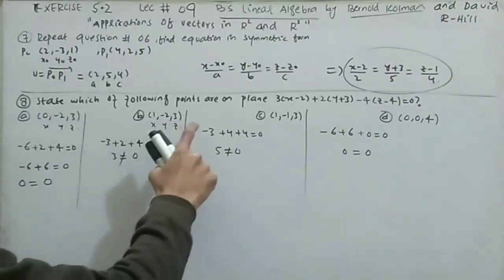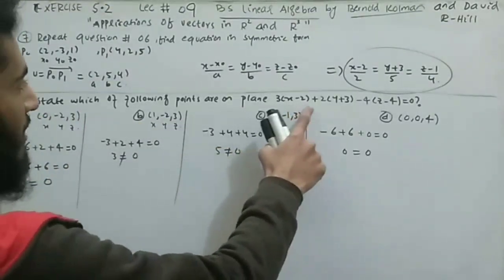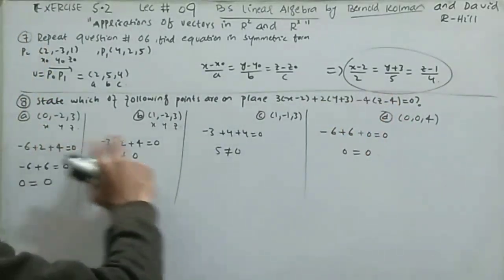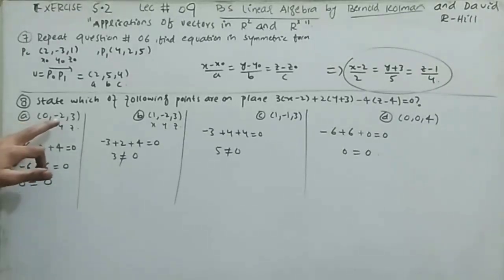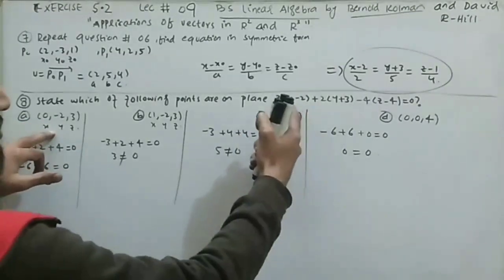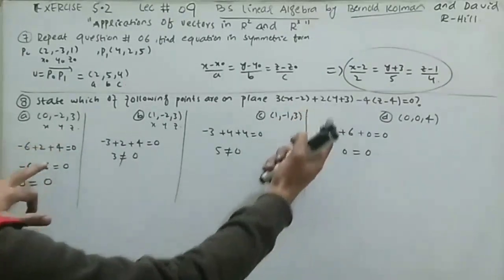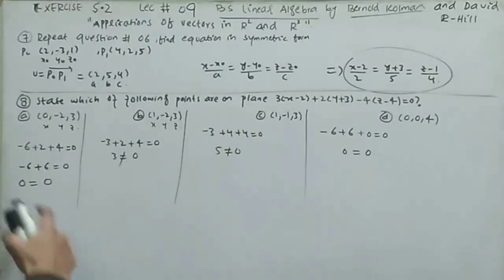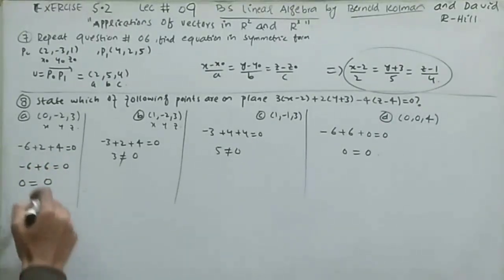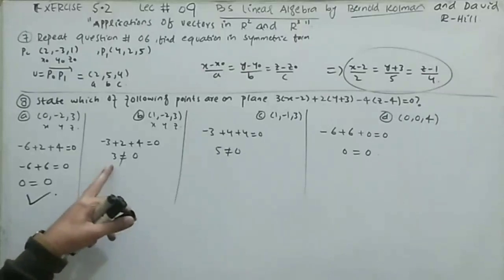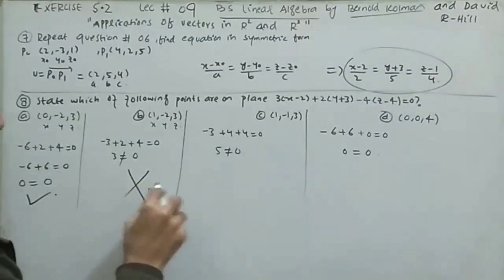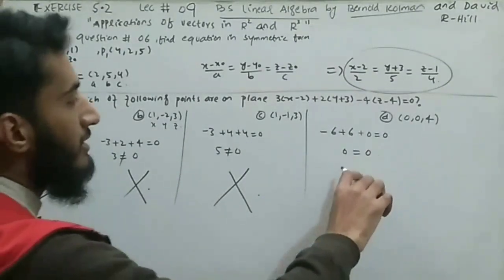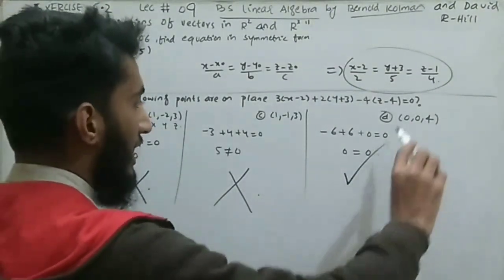Question 8: state which of the following points lie on the plane 3(x − 2) + 2(y + 3) − 4(z − 4) = 0. For part (a), substituting gives −6 + 2 + 4 = 0, i.e., 0 = 0 — valid, this point lies on the plane. Part (b) gives 3 ≠ 0 — does not lie on the plane. Part (c) also does not satisfy the condition. Part (d) satisfies the equation, so it also lies on the plane.